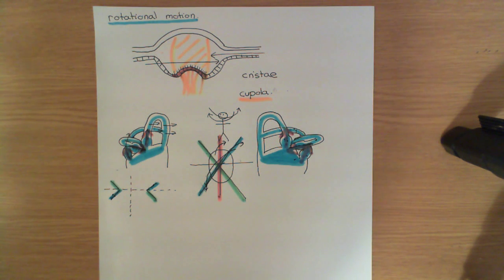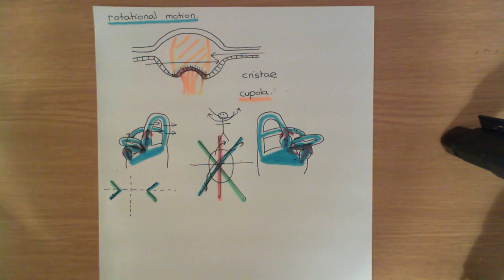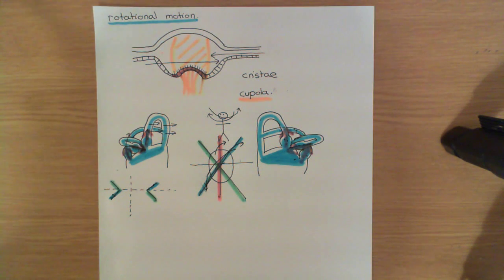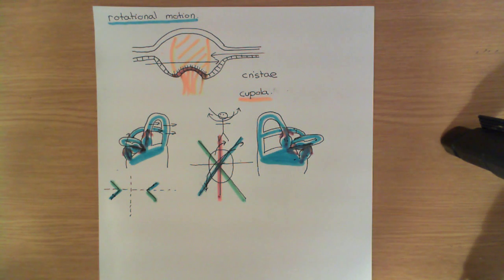What I now want to go through is the neuroanatomy of where this information is actually going to go to. The first pathway I want to look at is how all this information is going to go up to the cerebral cortex for processing, where it will be used consciously — giving us conscious awareness of our current head orientation with respect to gravity, and conscious awareness of our current rotational and linear motions of the head. We'll go over the conscious pathway first, then the vestibulo-ocular reflex pathway, and then the vestibulospinal reflex pathway.